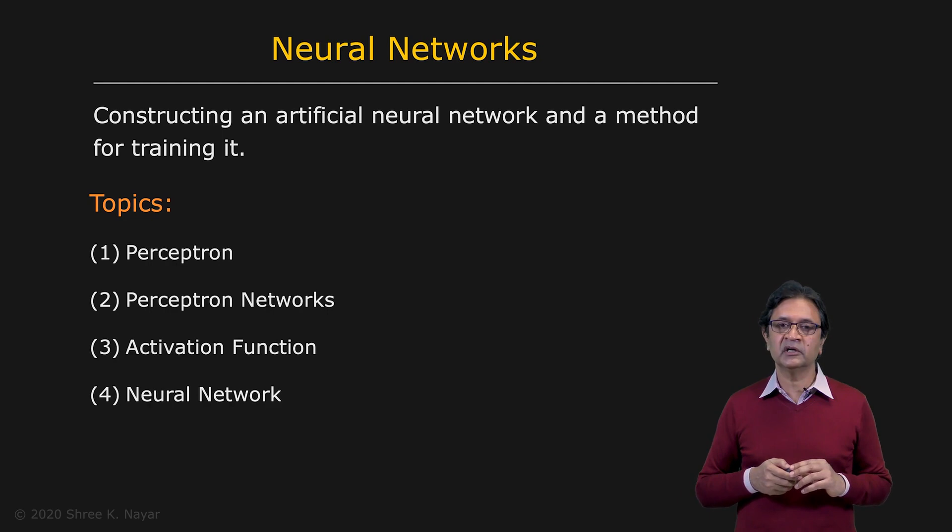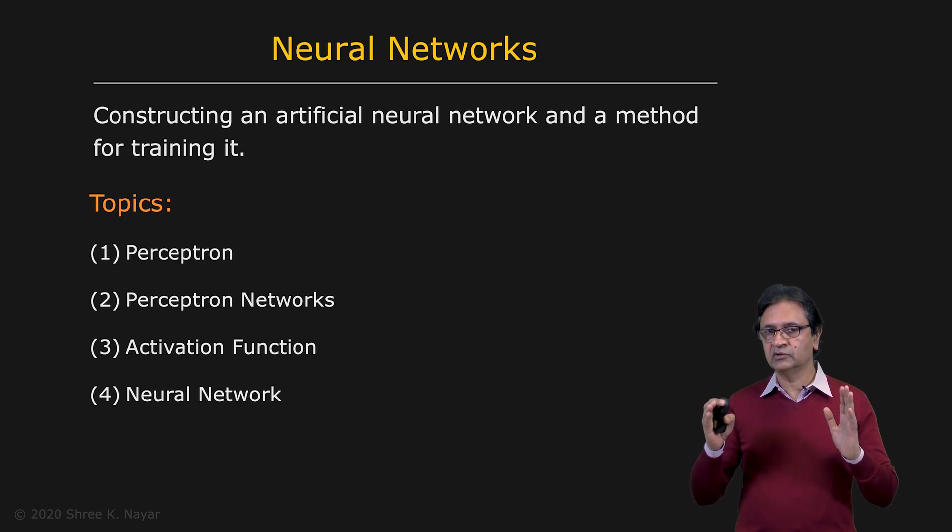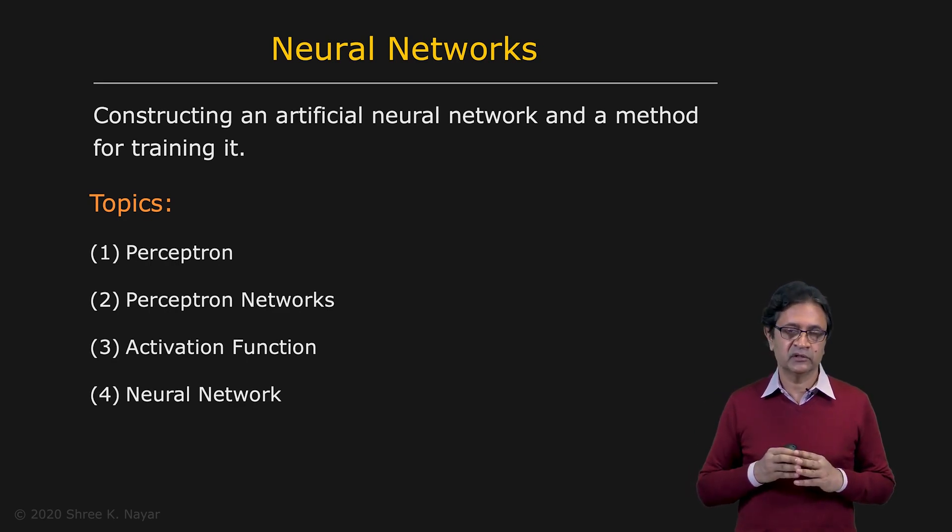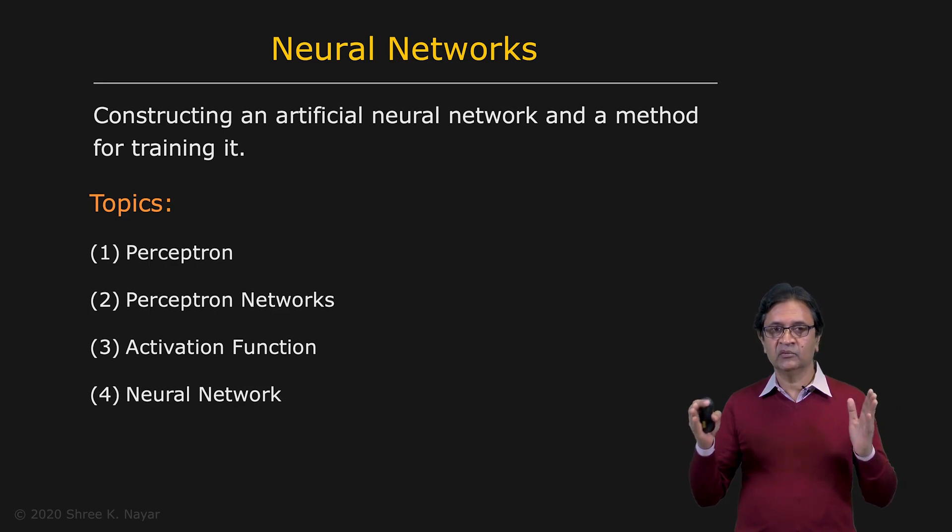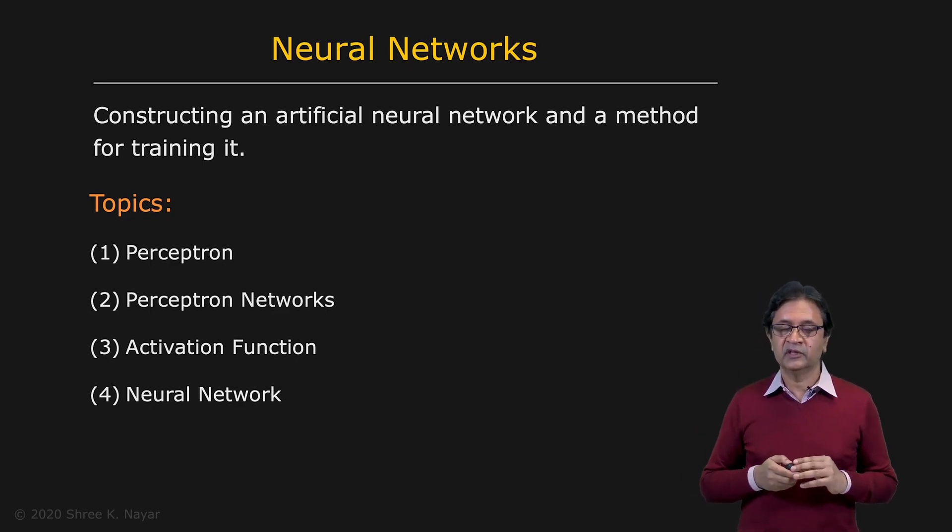So we'll talk about the neural network and the architecture of the neural network. And we'll show that the key challenge to neural networks is training the neural network. A reasonably sized neural network could have millions of parameters. So given training data, one of the goals is to find the parameters of the neural network that is going to perform the mapping of the input to the output with a high level of reliability and accuracy.